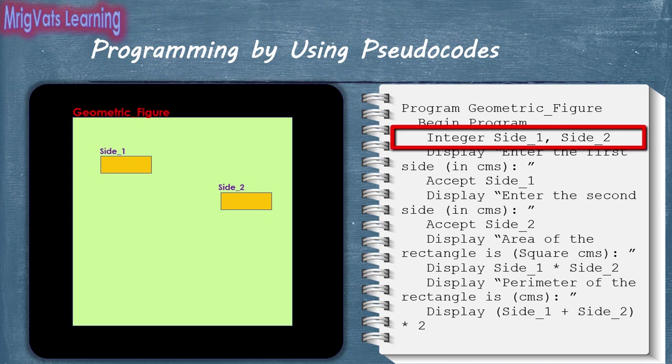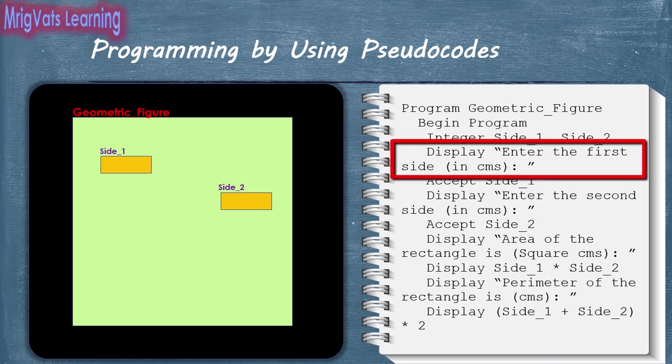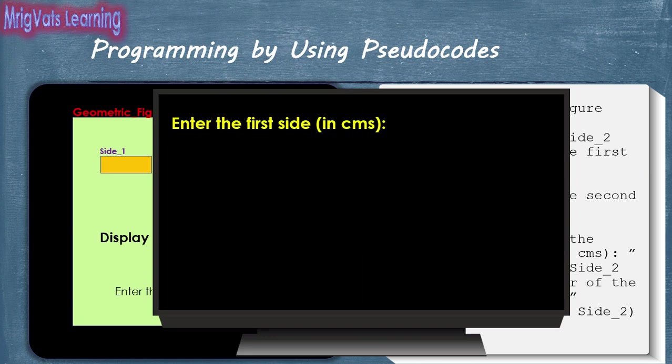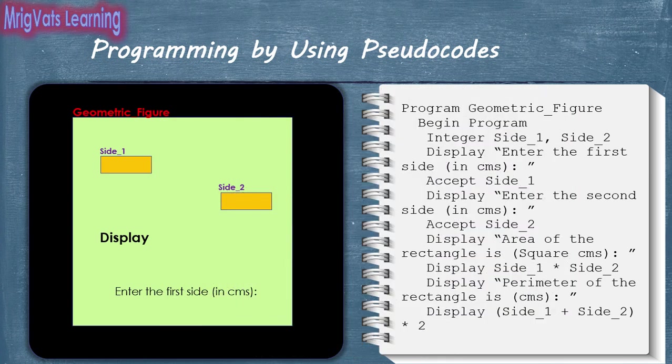If you created a program that uses variables to store results of the calculations, there is no harm. However, as much as possible, we should avoid using variables to store values that can be calculated. As soon as the display statement is run, the program writes the 'enter the first side in centimeters' text in memory, which the display statement takes as input and displays on the virtual display board. The memory associated with the display statement is then released for other statements of the program.